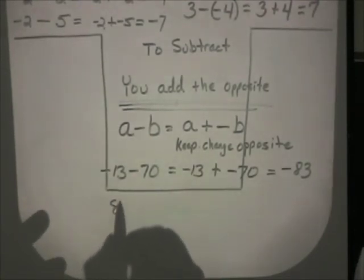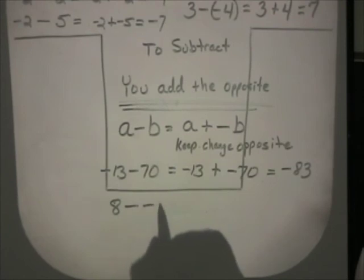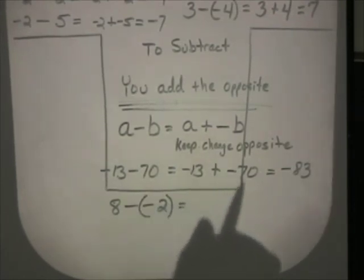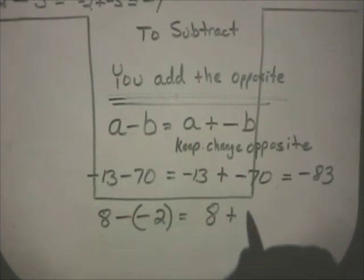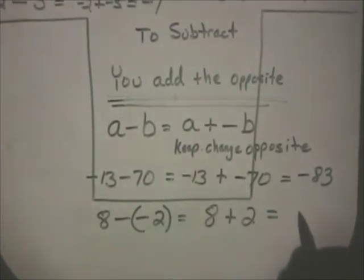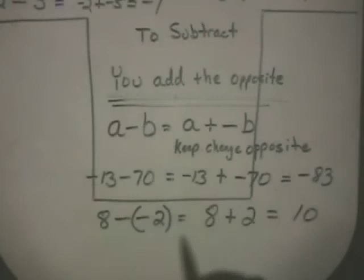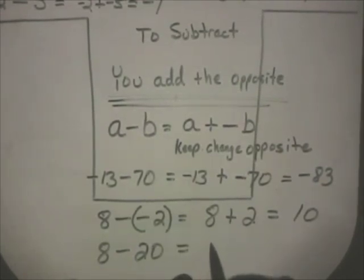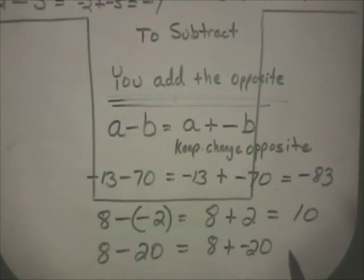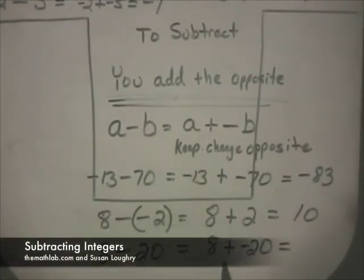Here's another quick one: 8 minus negative 2 equals 8 plus the opposite of negative 2, which is 8 plus positive 2, which is 10. How about 8 minus positive 20? Written as addition of the opposite, that's 8 plus negative 20. Think money — if you have eight dollars and you spend 20, you're in debt 12 dollars.